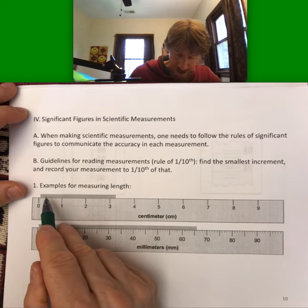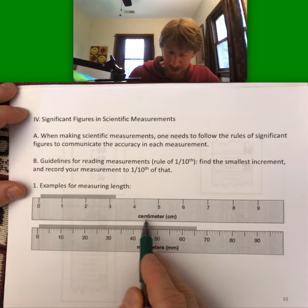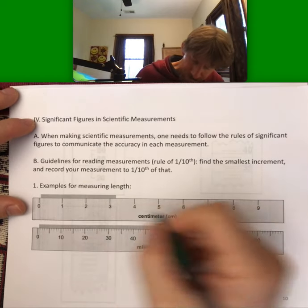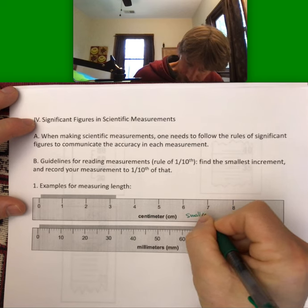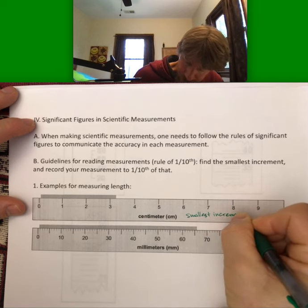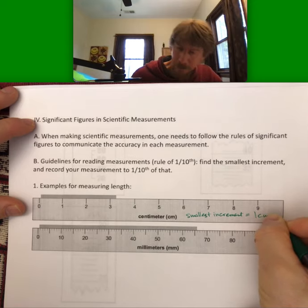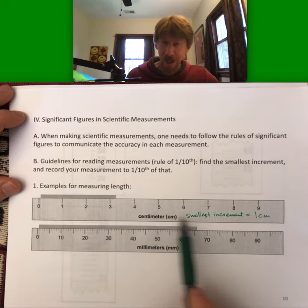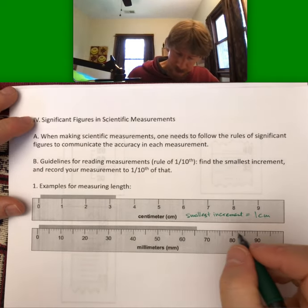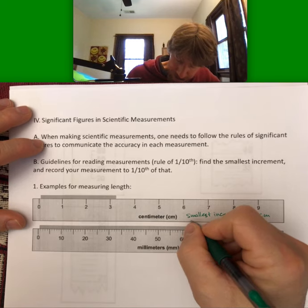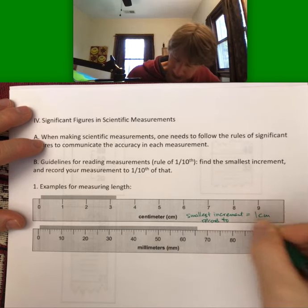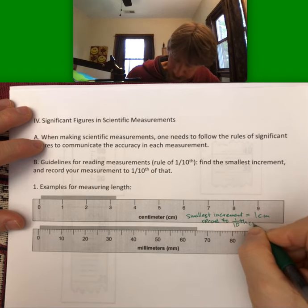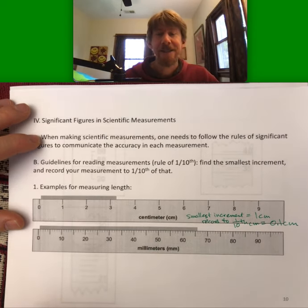So if I want to measure the length of this line using this ruler, I can see that the smallest increment equals one centimeter. It's zero, one centimeter, then two centimeters, so one more centimeter. So record measurement, record to one-tenth of that. So one-tenth centimeter equals 0.1 centimeters.